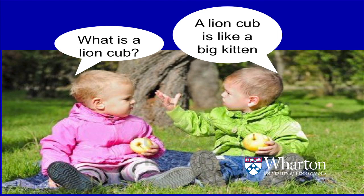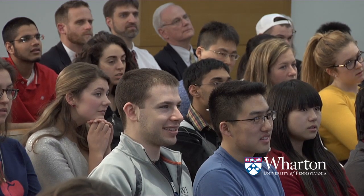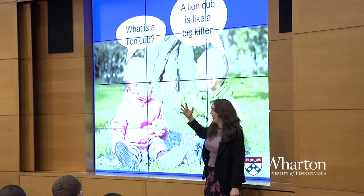These slightly pixelated little boys are an excellent example of analogical reasoning. The boy on the right does not know what a lion cub is. The boy on the left can help his friend out by leveraging an analogy we've all used. A lion is a big cat. If you want to know what a lion cub is, it's a big kitten.